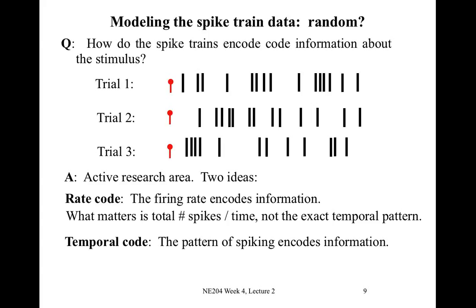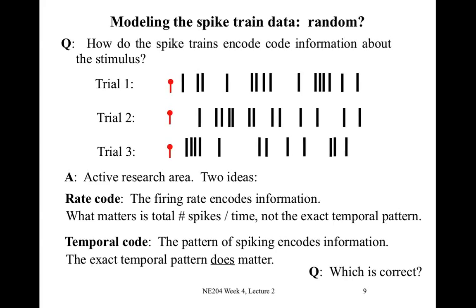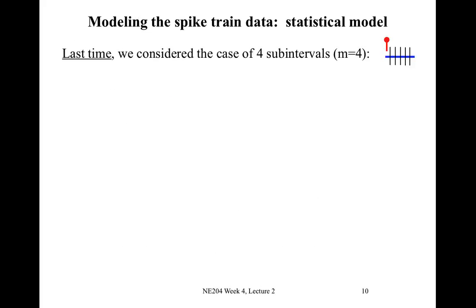An alternative hypothesis is called the temporal code. In this case, the pattern of spiking encodes the information — the exact pattern matters. Here we care about the intervals between spikes and whether a spike occurs at the very beginning of the trial or somewhere in the middle. In the temporal code, the exact temporal pattern does matter. Which is correct remains an open question — it is not known how the neuron encodes information, and this remains an active research area.